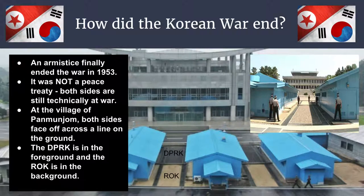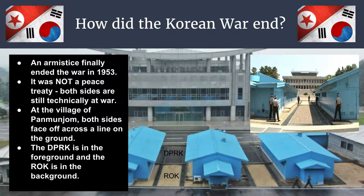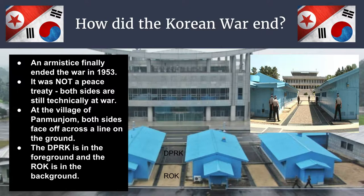Literally since 1953, both sides have technically been at war. Both sides still have aspirations to take over the other side, although the North Koreans are obviously more aggressive about it. This historical background leads into how things escalated to the current situation between President Trump and Kim Jong-un as of 2017. It is now time to write summaries of your notes and stay tuned for what happened when the Korean War once again became a Cold War.